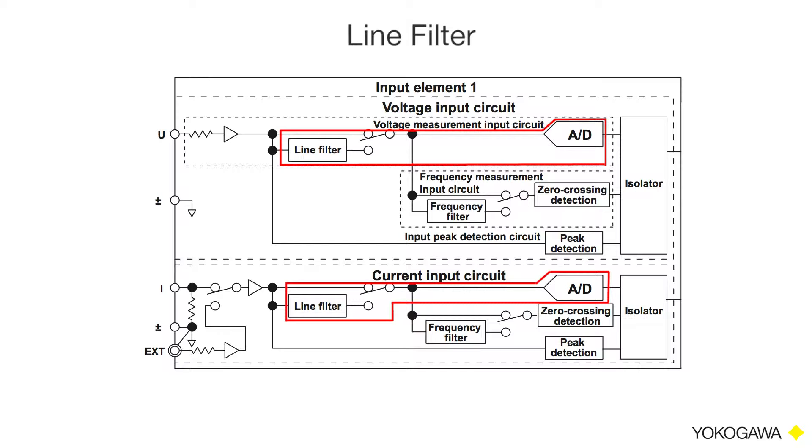When the line filter is turned on, measured values will not contain high frequency components. This includes all the harmonics or interharmonics from high frequency components.